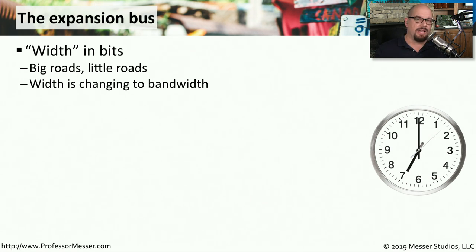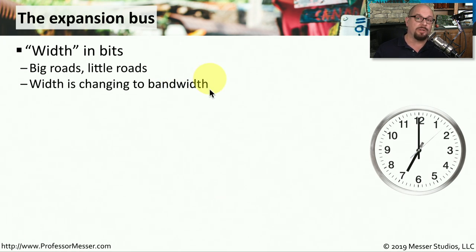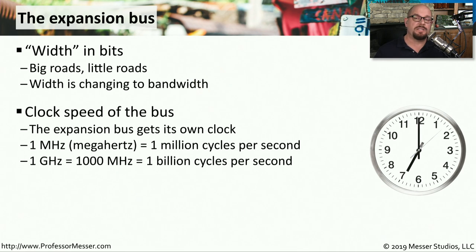Older expansion slots that supported parallel communication allowed us to send information across the bus, and the wider the bus allowed us to send more information. As we've transitioned from a parallel bus to a serial bus, we no longer describe the size of the bus as the width or the number of bits we can communicate. Instead, we describe it in the total amount of bandwidth we're able to communicate across that bus. You often see specifications of a motherboard that describe a particular bus running at a particular clock rate or speed.